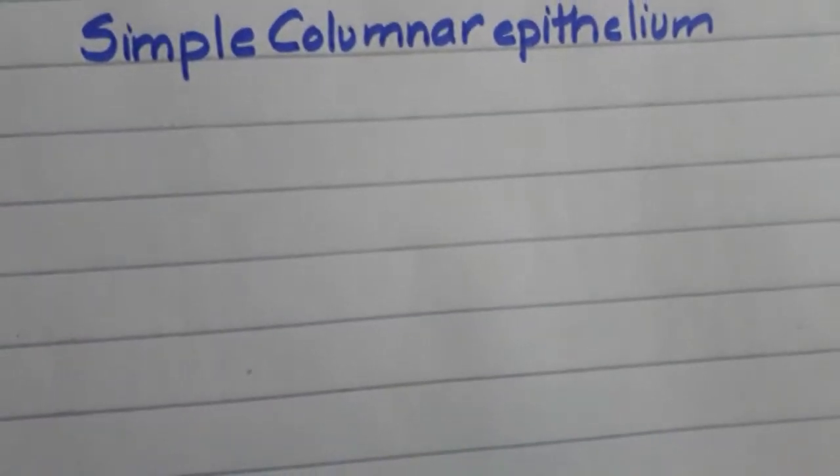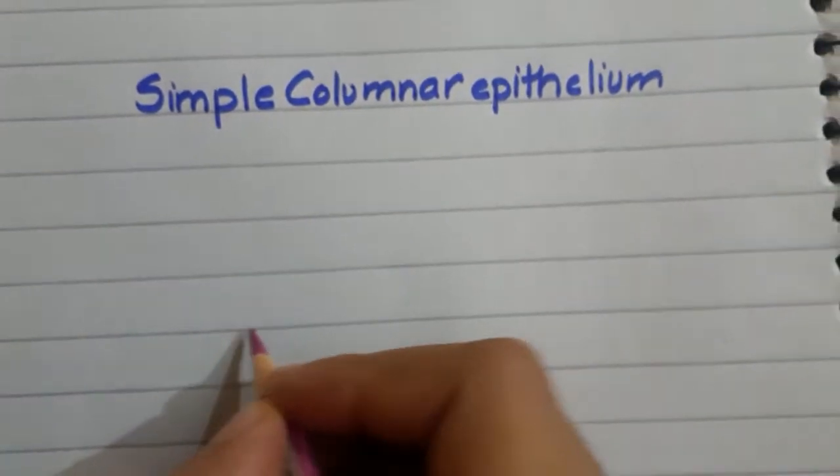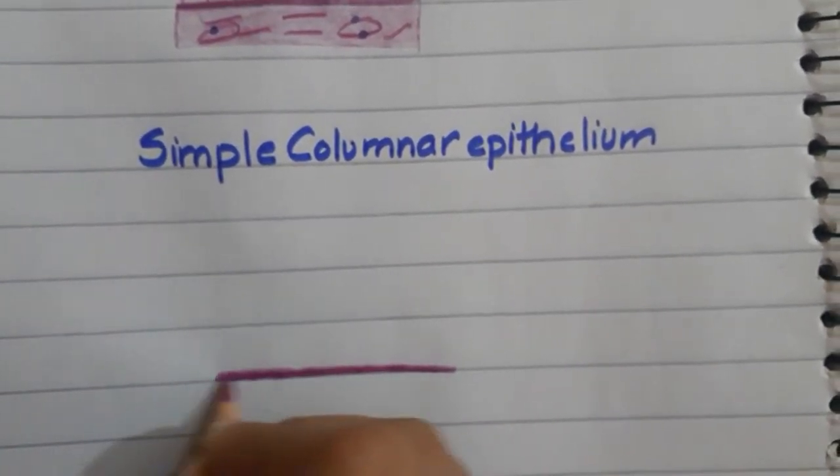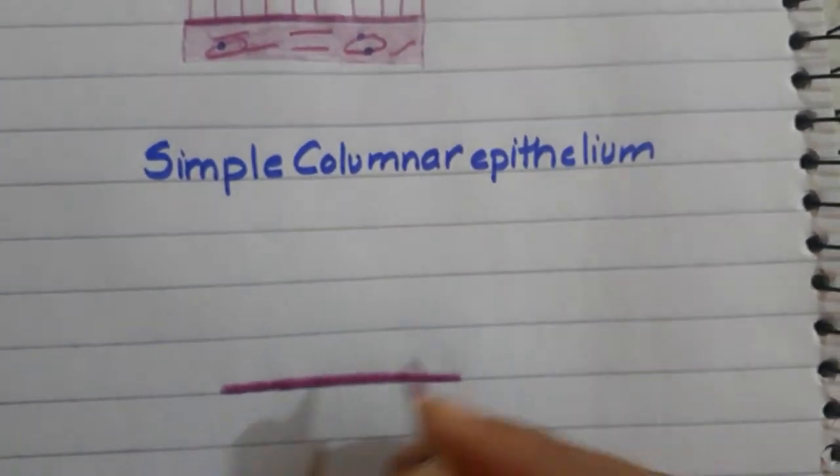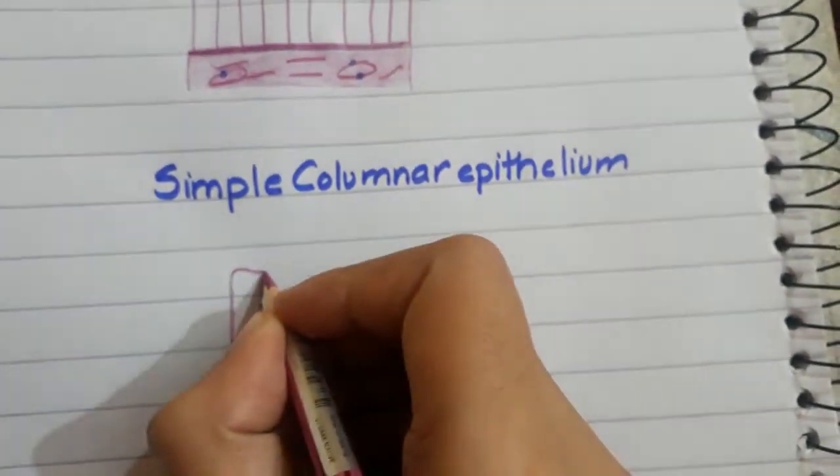We will draw the simple columnar epithelium. What will we do? We will drop one line, we will start the dark color, and we will start the columns this way.